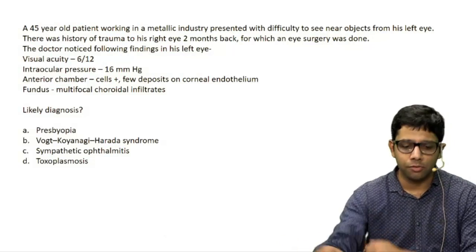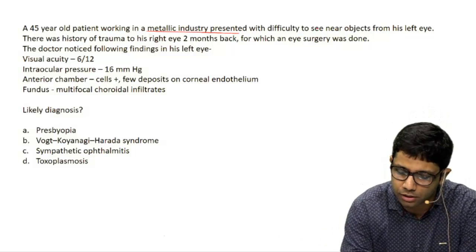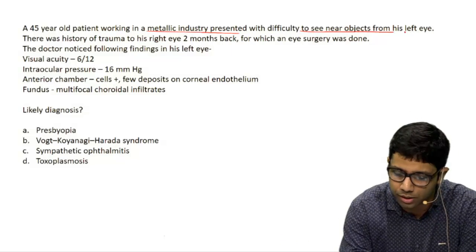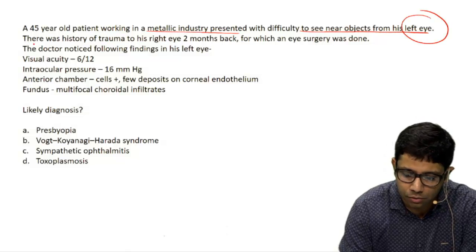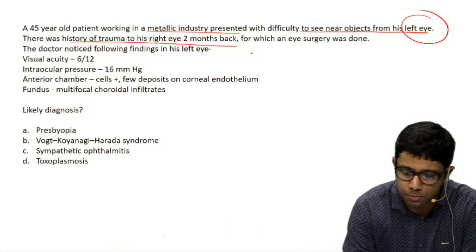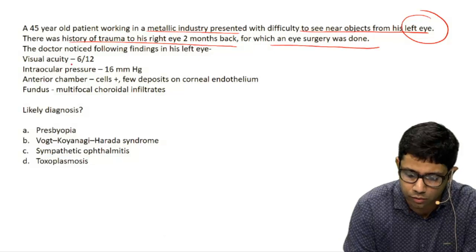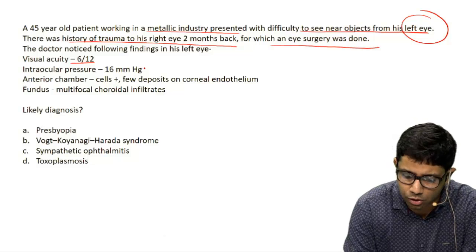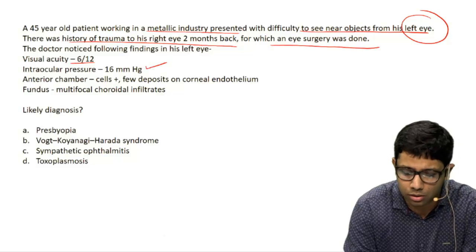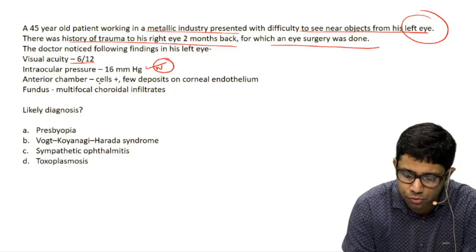A 45-year-old patient working in a metallic industry presented with difficulty seeing near objects from his left eye. There is a history of trauma to the right eye two months back, for which an eye surgery was done. The doctor noticed the following findings: visual acuity slightly less than 6/12, intraocular pressure normal at 10 to 21 mmHg.